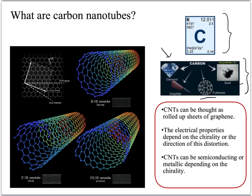Nanotubes can be thought of as rolled up graphene sheets. The electrical and optical properties of the nanotubes depend on the way the graphene sheet is rolled to form the tube.